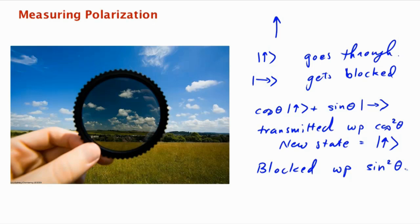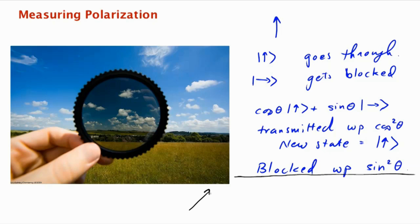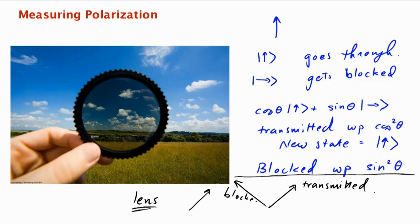It's blocked with probability sine squared theta. You can also change the angle of this lens — change its orientation. For example, if you rotate the lens so it's oriented at 45 degrees, that corresponds to a measurement in that basis. Photons which are polarized diagonally like this are transmitted, and photons in the perpendicular orientation get blocked.